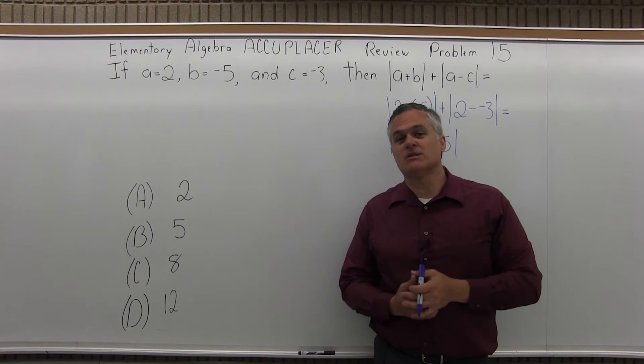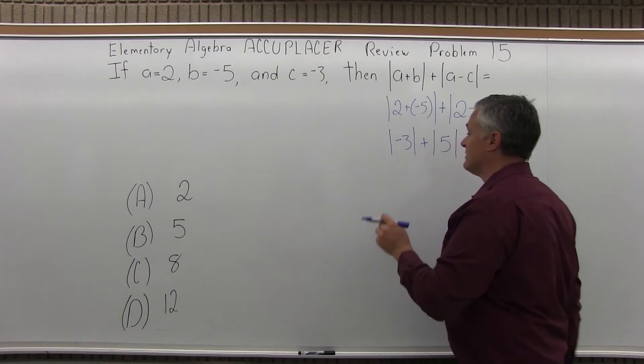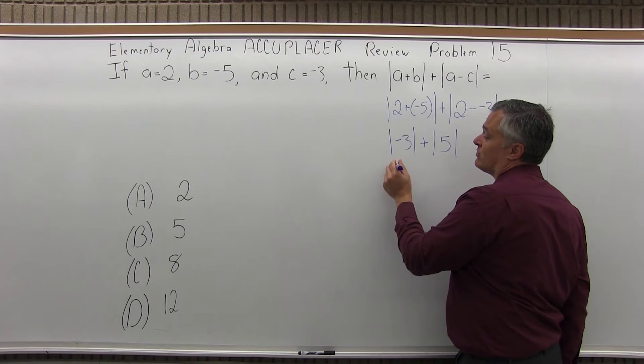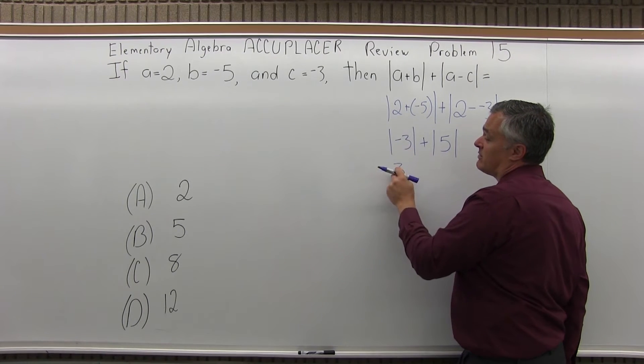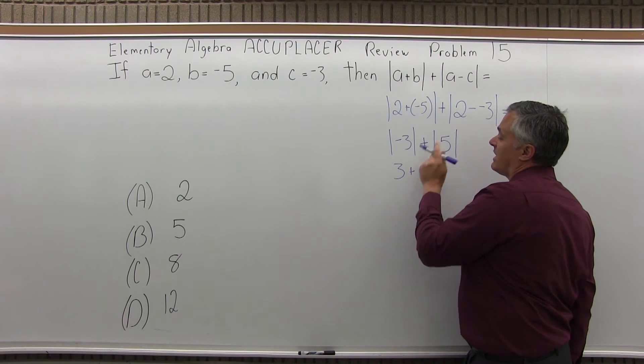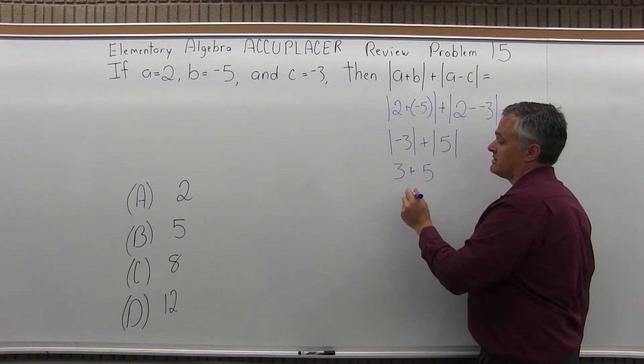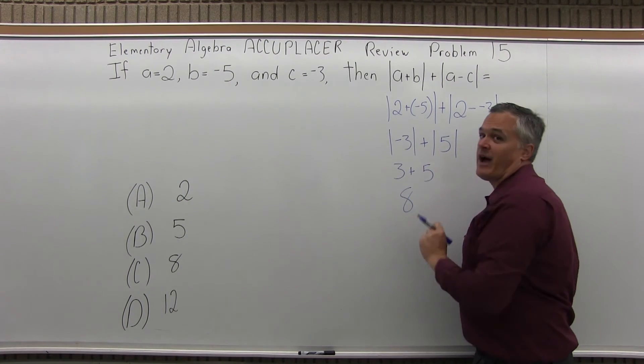Now again, absolute value means keep the number the same, make sure the result is positive. So the absolute value of negative 3 is positive 3. Same number, but it's positive. Absolute value of positive 5 is 5. Again, same number, but it's positive. And then 3 plus 5 more, I get an answer of 8.